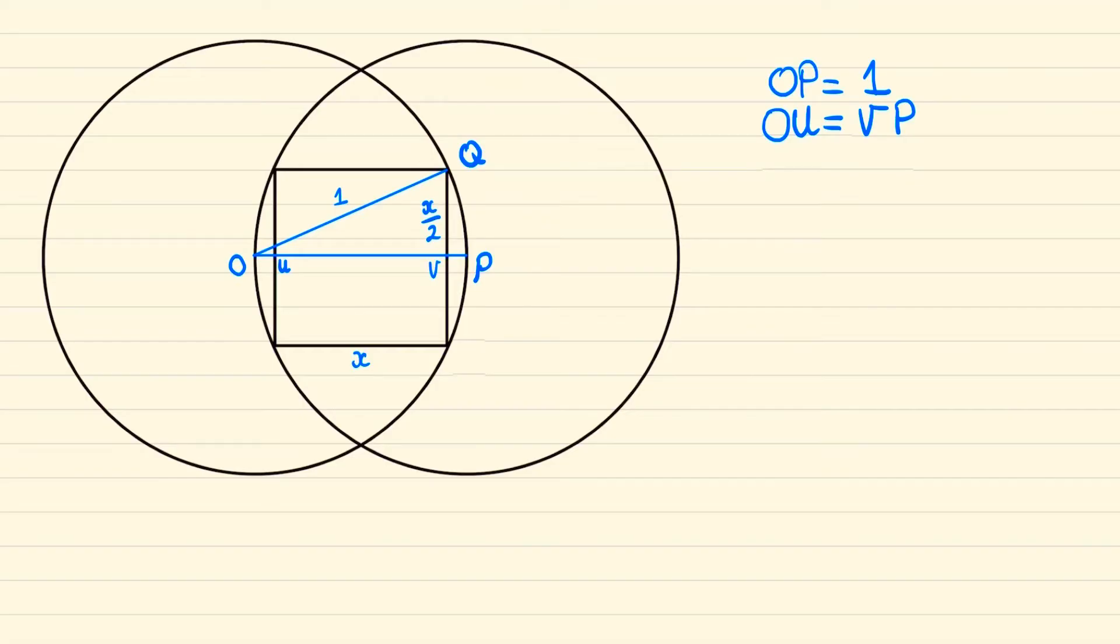We can also recognise by symmetry that o to u will equal v to p, and so we can figure out here that o to u plus v to p must equal 1 minus x. Since o to u and v to p are the same, we know that o to u must be 1 minus x over 2.